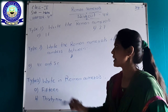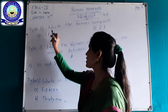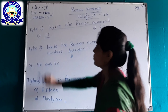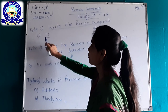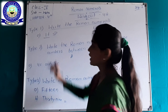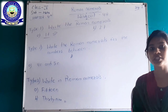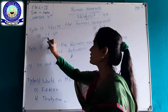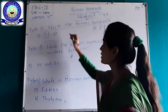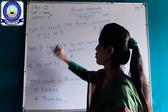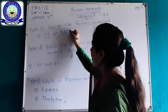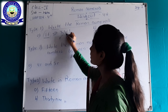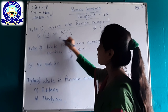There are many types of questions. Here is type 1: write the numbers in Roman numerals. For example, 16. We all know there are 7 letters used in Roman numerals. For 16, we use X for 10, V for 5, and I for 1. Ten plus five plus one gives us 16.